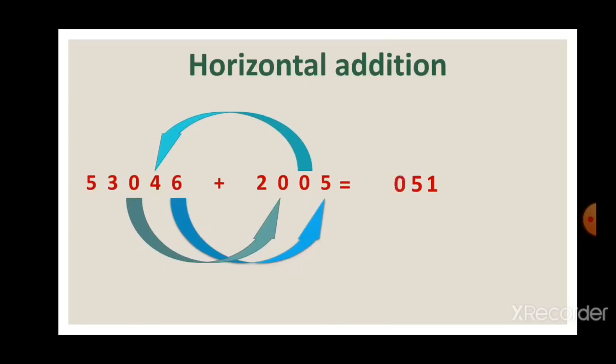After the hundreds place, we move to the thousands place: 3 thousands plus 2 thousands makes 5 thousands, so we write 5 in the thousands place. In the ten-thousands place, the first number is 5 but there is no second number to add, so we bring 5 directly into the answer. Our answer is 55,051. So 53,046 plus 2,005 is equal to 55,051. Thank you.